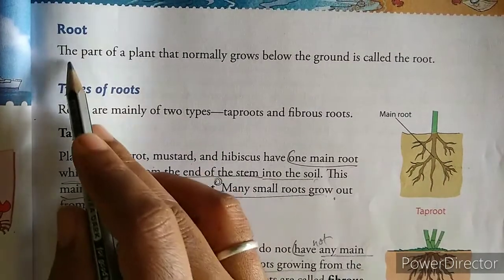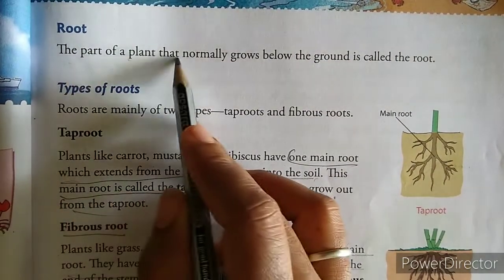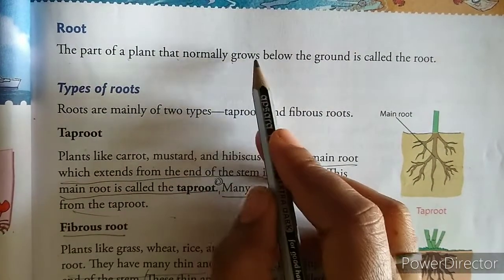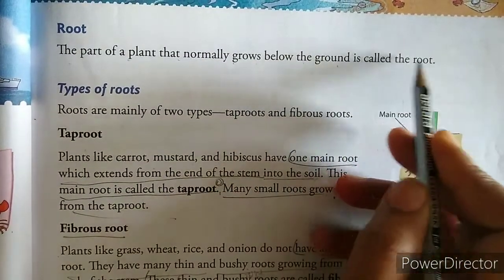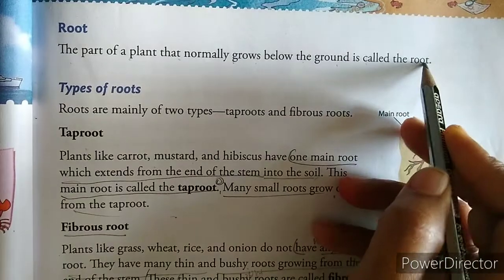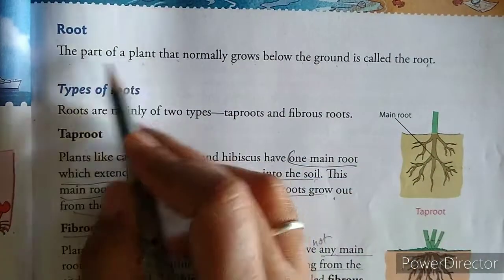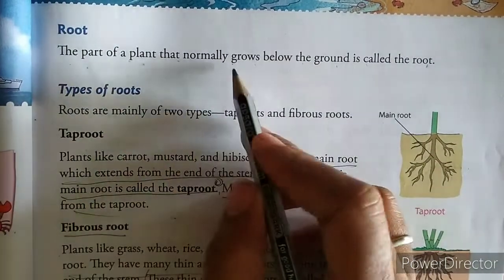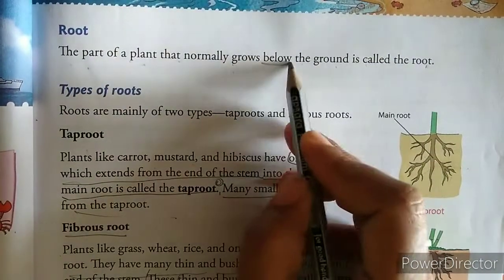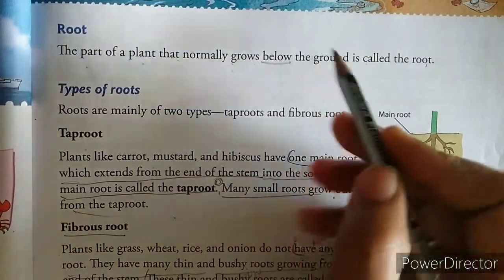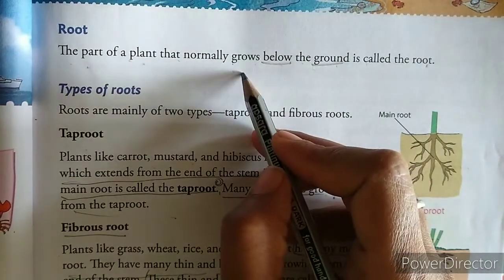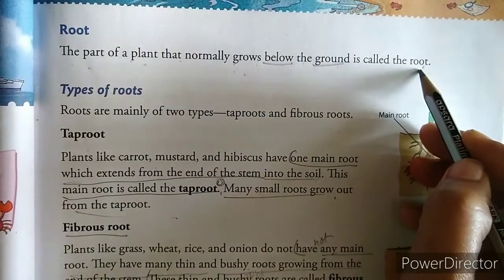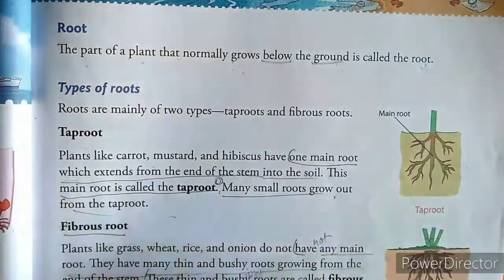The part of a plant that normally grows below the ground is called the root. Plant ka woh part jo normally neeche ki taraf, ground mein neeche ki taraf grow karta hai, woh root kehlaata hai.